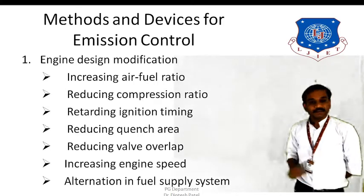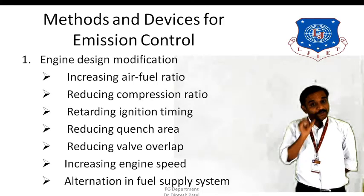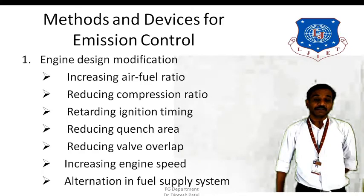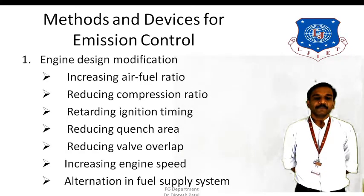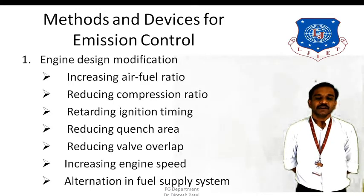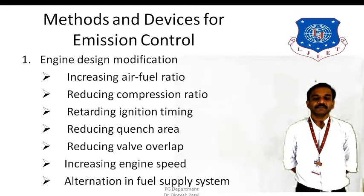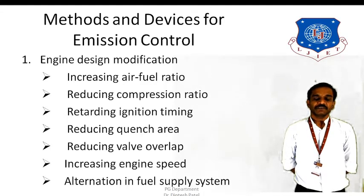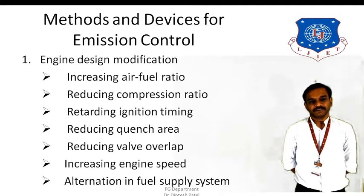The second one is by reducing the compression ratio. If the compression ratio is lower, then the emissions of HC will also reduce. Because due to the high compression ratio, a large amount of fuel may escape from the combustion chamber and enter into the crevice volume. It can also be absorbed by the film of oil. So if the compression ratio is reduced, then we can solve these problems and reduce the HC emissions.